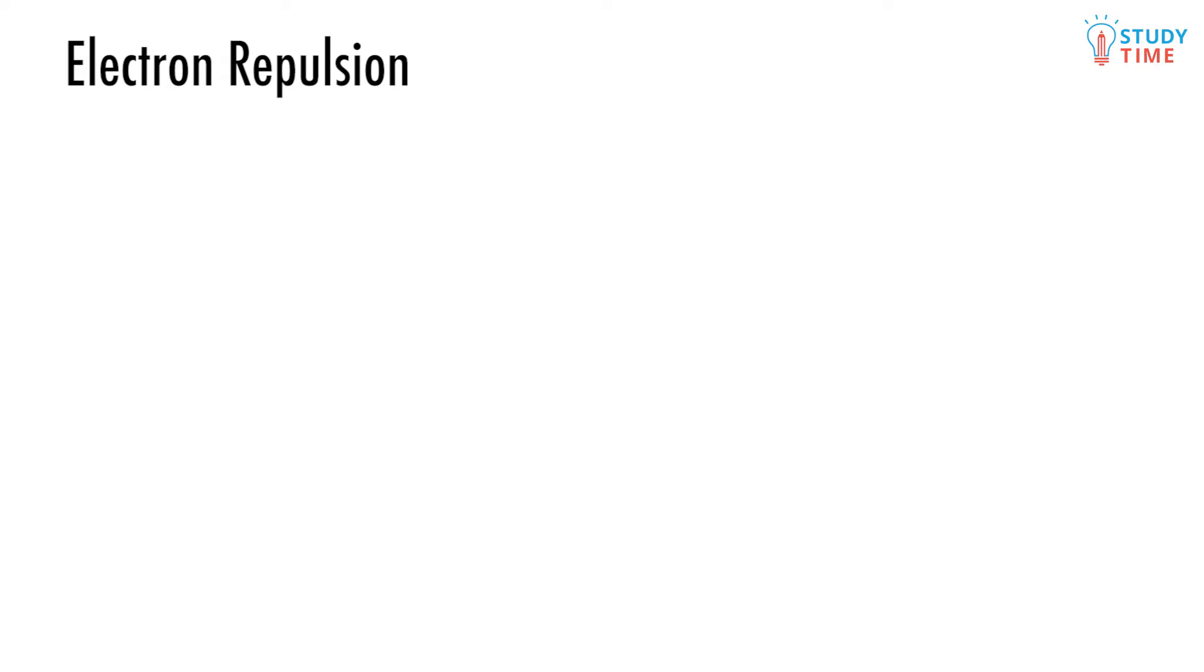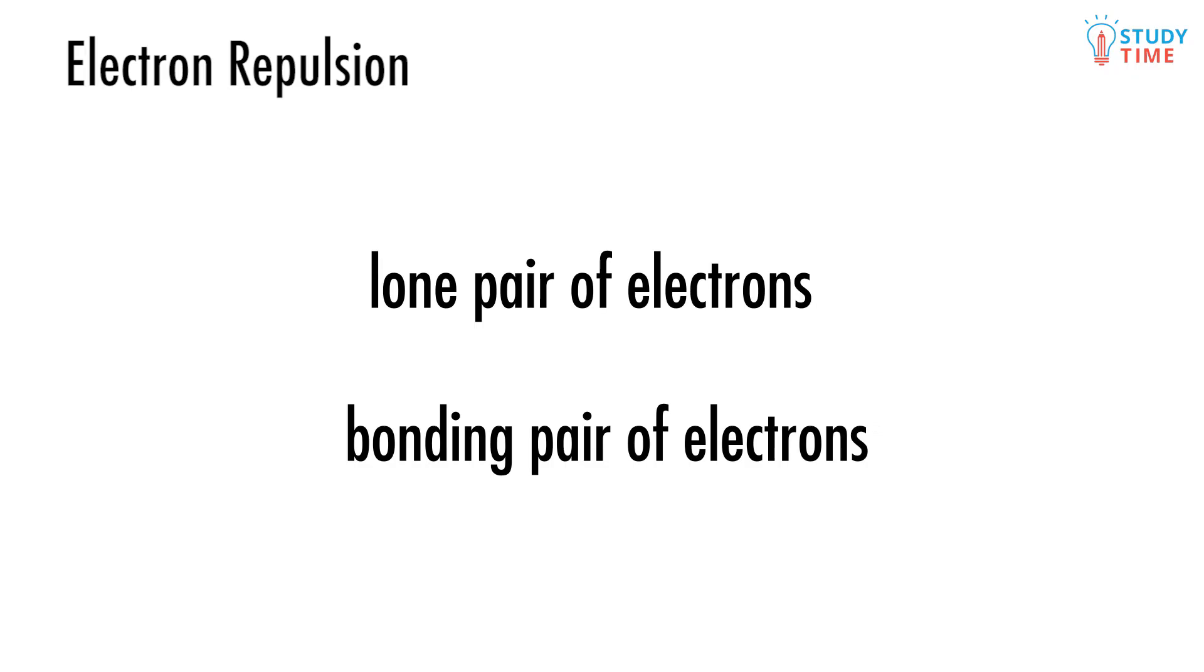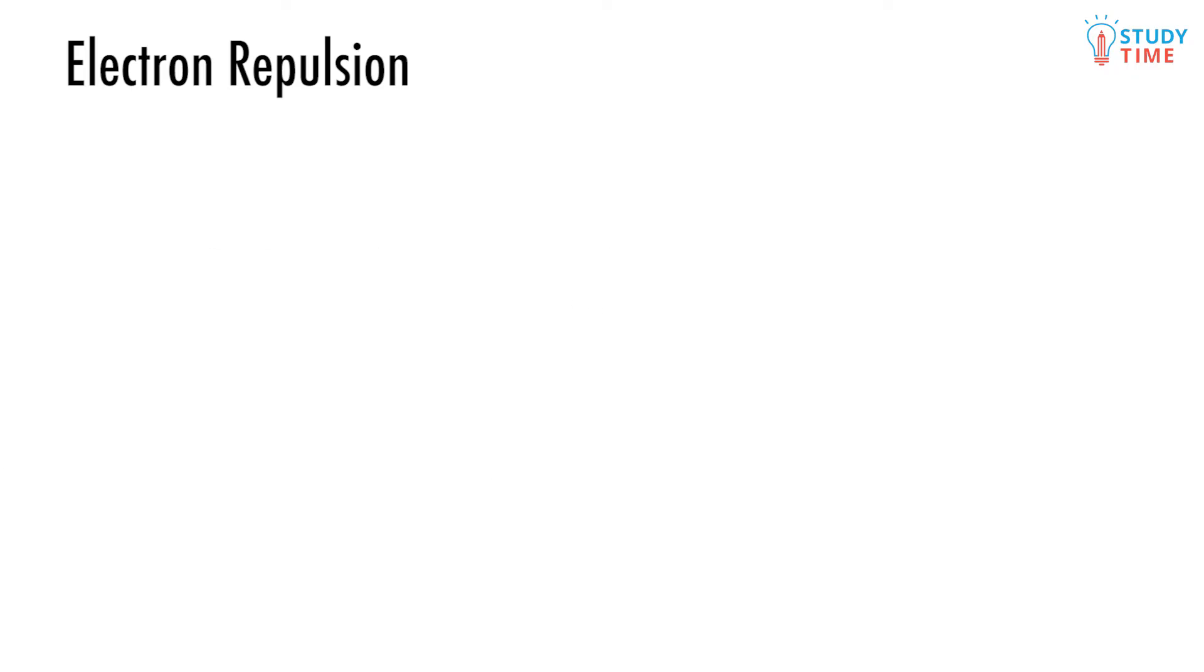Right now, we want you to try and think about a lone pair of electrons and a bonding pair of electrons as being almost essentially the same thing. We call both of these things regions of electron repulsion. Why do we do this?